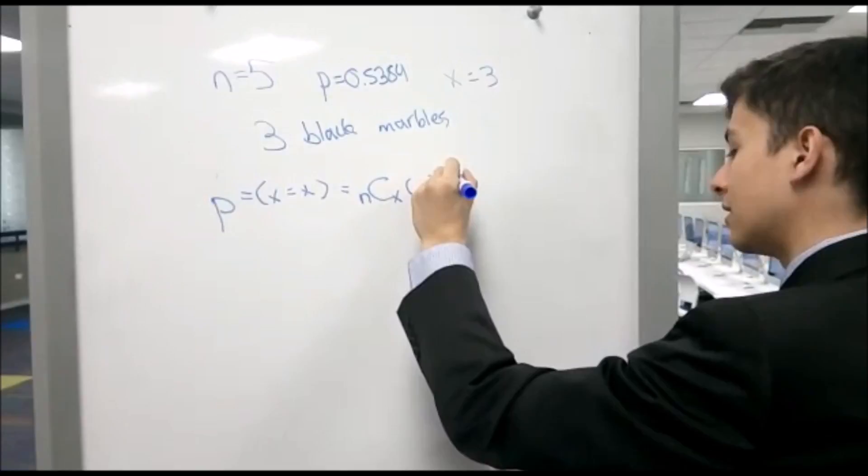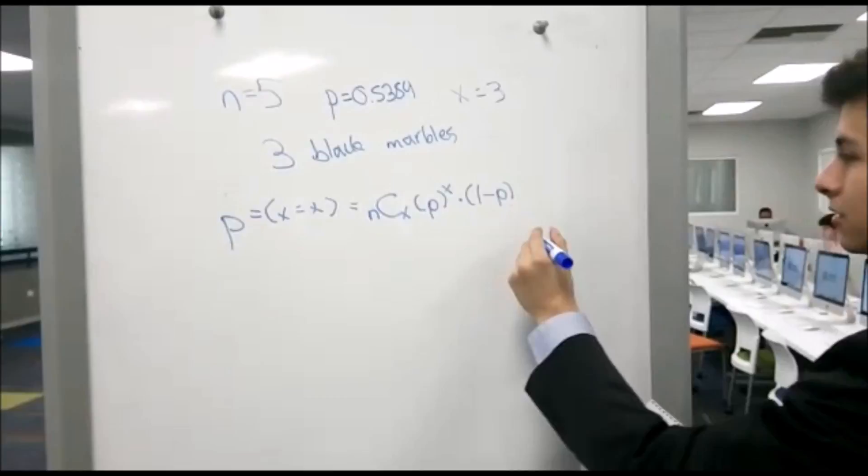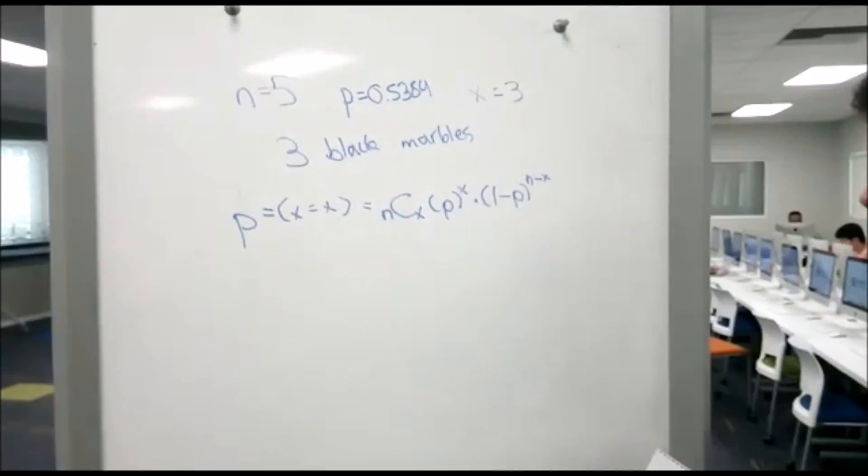p^x times 1 minus p, because it's the probability of failure, to the exponent n minus x. After you have the formula well defined, we can start with the problem.